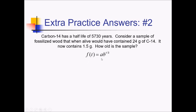F of T equals AB to the T over K. We're actually solving for time T, so we fill in values for all other variables. F of T is 1.5 — that's the target amount. The A value, the starting amount, is 24 grams. B is the growth factor — that's 1.5; you're multiplying by 1.5 each time. T is unknown. K, the half-life time, is 5,730 years. To isolate the exponential term, divide both sides by 24.